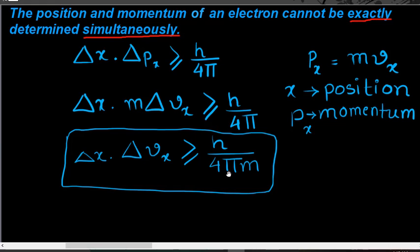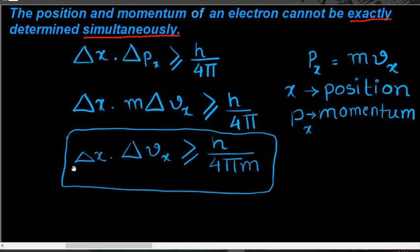The uncertainty is at its minimum here. If the uncertainty in position is zero, then the uncertainty in velocity will be very high, and vice versa — these two are inversely proportional to each other. From this, it can be stated that the position and momentum of an electron cannot be exactly determined simultaneously: if we can determine the position, we cannot determine the velocity, and if we can determine the velocity, we cannot determine the position.